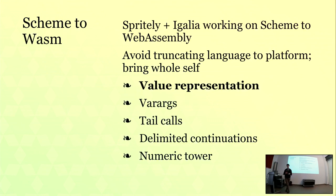In this talk, I want to go over a strategy I'm using to compile Scheme to WebAssembly. In collaboration with Igalia and Spritely Institute, we're building a compiler for all of Guile, starting with a subset of Scheme. The approach we're taking is to avoid cutting corners. When you target JavaScript, you have a strong incentive to make your numbers match JavaScript's numbers or omit features like multiple value returns that don't fit the platform. In this case, we're going to try to bring the whole language.